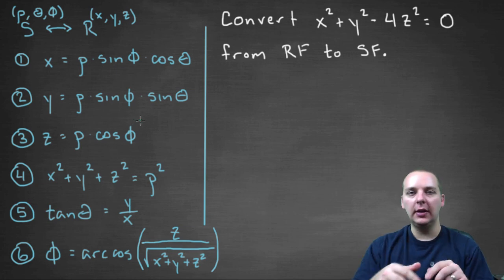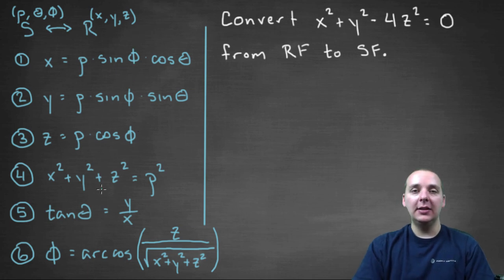And sometimes there's more than one way to do this. But the main thing is to get the x's, y's, and z's converted to ρ, θ, and φ in the shortest way possible. So a lot of this just takes some practice and some thinking. Like for example, when I look at this example...